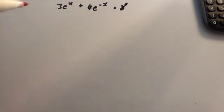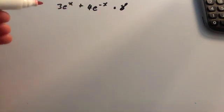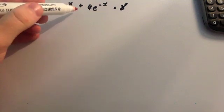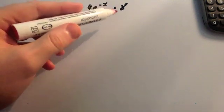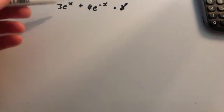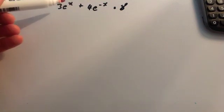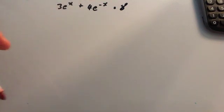Here we've got the question that a few people have asked me about: 3e to the x plus 4e to the minus x equals 8. What I first notice is that it's got e to the x, and the x we're trying to find is the power, so we're probably going to have logs involved here.